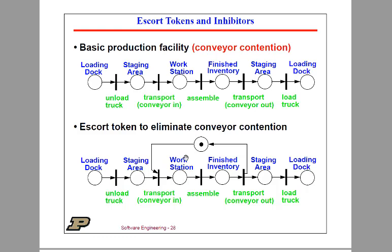Think about this for a minute. We've consumed the escort token. If something else shows up on the loading dock — another kit of parts — then that can move into the staging area. But this won't be able to fire. The kit of parts is going to be trapped in the staging area because the conveyor is not ready to fire — this escort location will be empty.